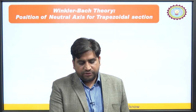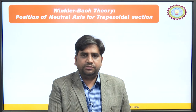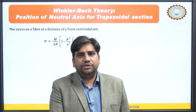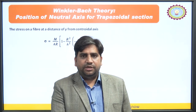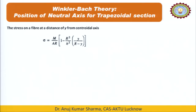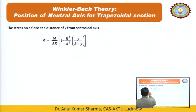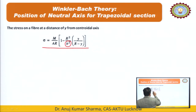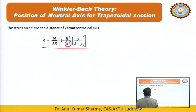We use Winkler-Bach theory. By using this formula we can easily calculate the stress induced in any cross section. The formula is: sigma = M / (A·R) × [1 − R²/h² × y/(R − y)]. Here h² is very important and it depends upon the cross section. For each cross section we calculate this accordingly. We already have that formula.